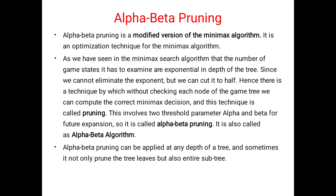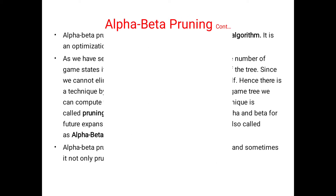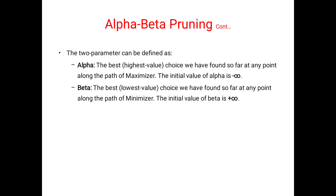Alpha beta pruning involves two threshold parameters, alpha and beta, for future expansion. It is also called the alpha beta algorithm. With the help of DFS we solve the alpha beta pruning problem. It can be applied at any depth of a tree and sometimes it not only prunes tree levels but also entire subtrees.